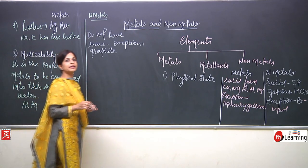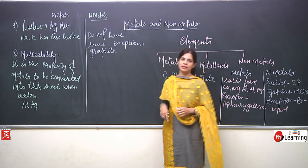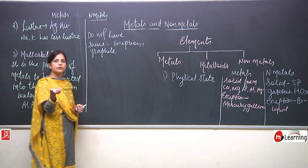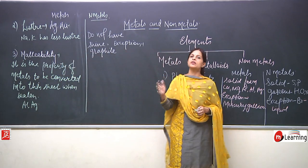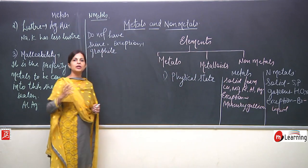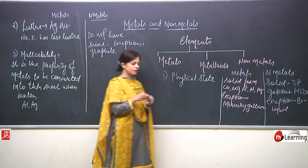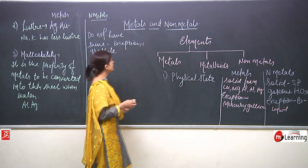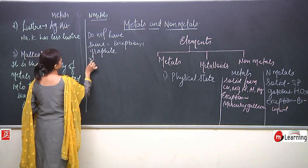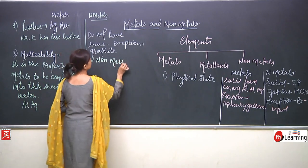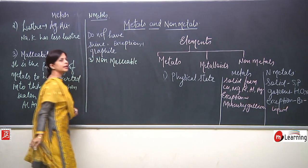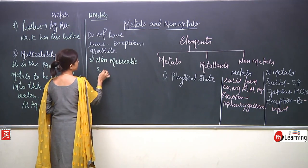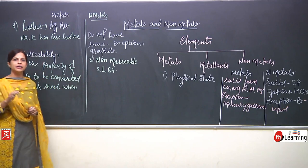When we talk about this property in non-metals, they are generally non-malleable. That means we cannot convert a non-metal into a sheet. If you hammer wood it will break into smaller pieces but will not be converted into a sheet. Non-metals like plastic, wood, sulphur, iodine, and bromine cannot be converted into sheets.